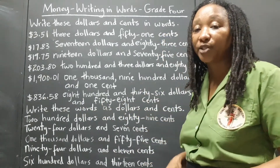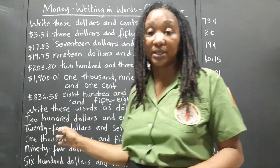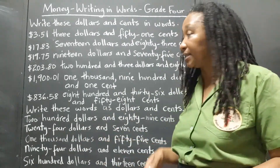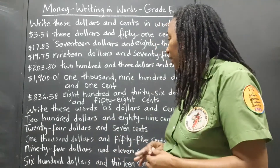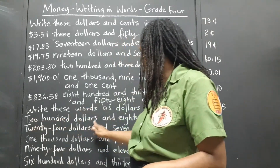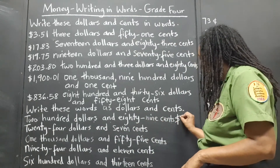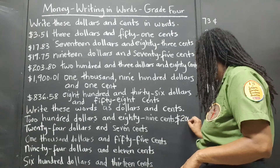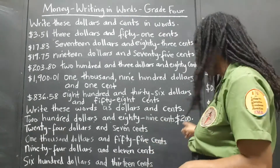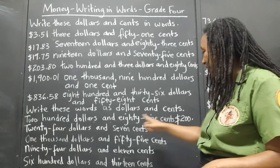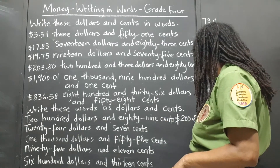Now we're going to do the reverse — we're going to read the numbers as they are written in words and write them in digits. So let's go. Two hundred dollars and eighty-nine cents: we put our dollar sign, $200, then our decimal point to separate the dollars from the cents, giving us $200.89 — so we put our 8 and our 9.